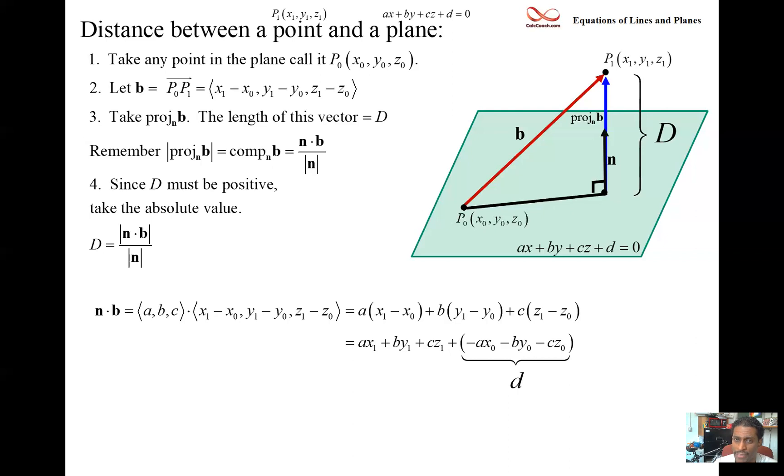And this is our numerator to the distance, capital D. The denominator is the magnitude of the normal vector, which is ⟨a, b, c⟩. So that's going to be the square root of a² + b² + c².